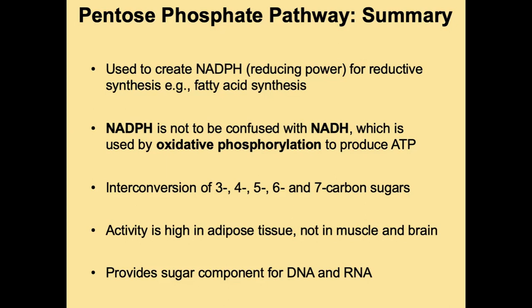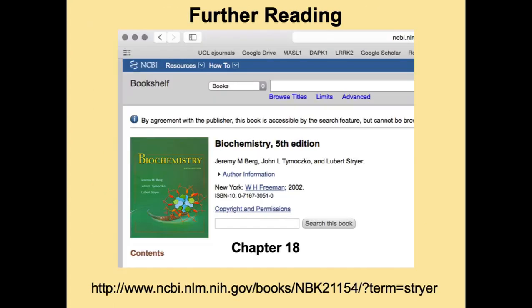The pentose phosphate pathway is also important because it provides the sugar components for both DNA and RNA. For more detail, the pentose phosphate pathway is covered in Chapter 18 of Stryer. Thank you for your attention.